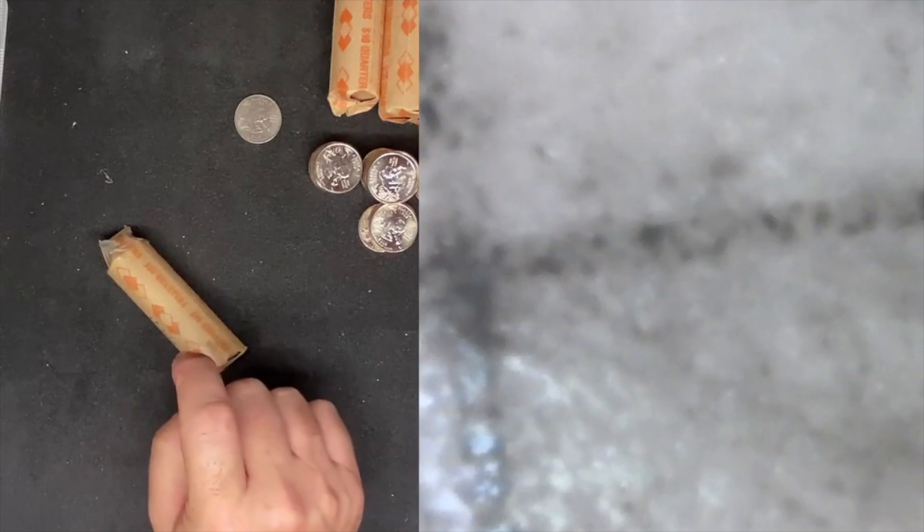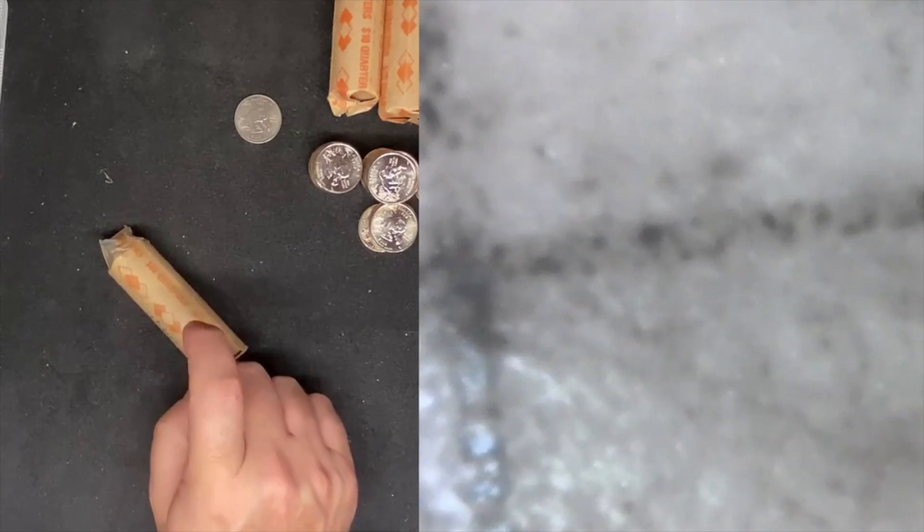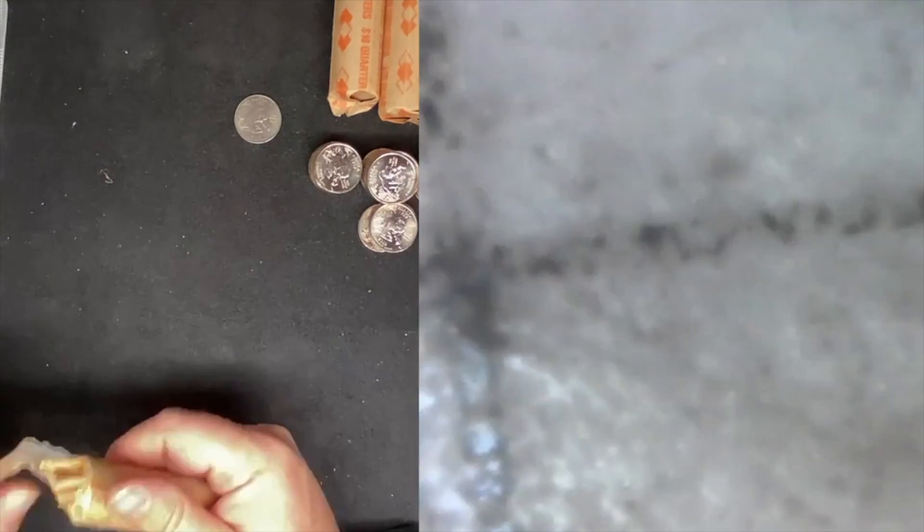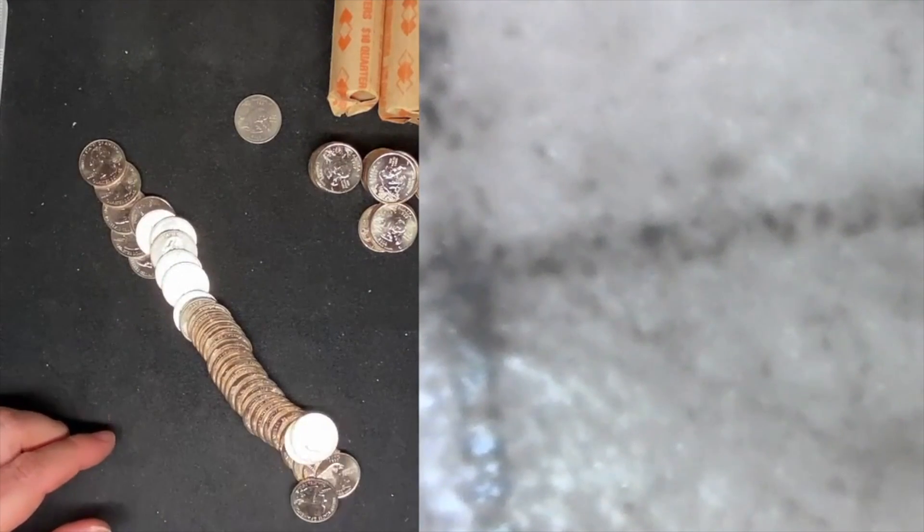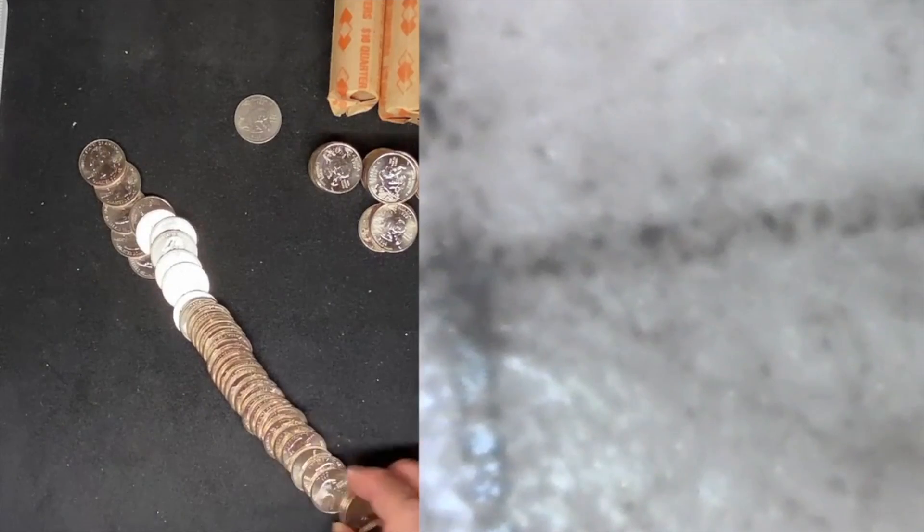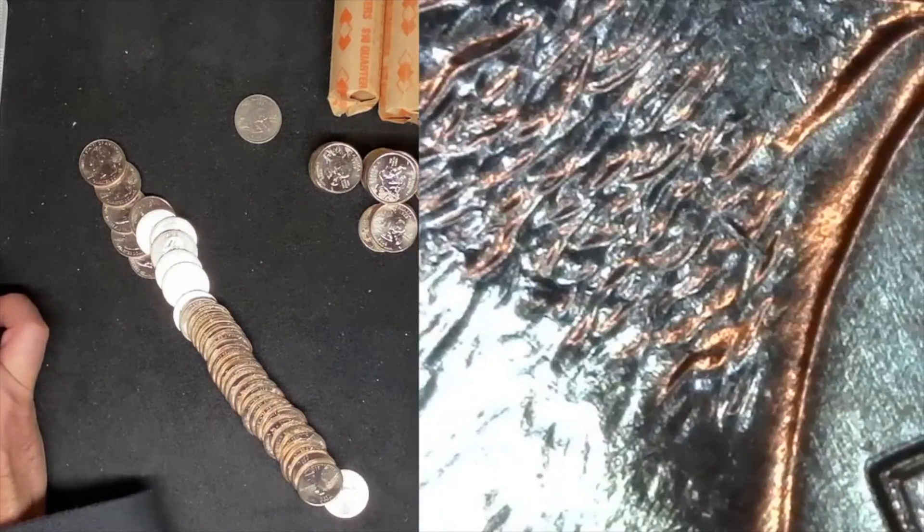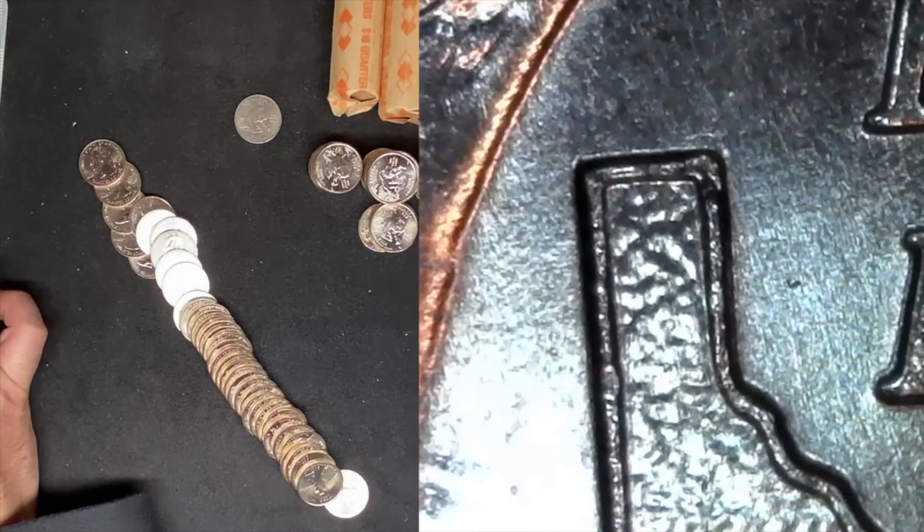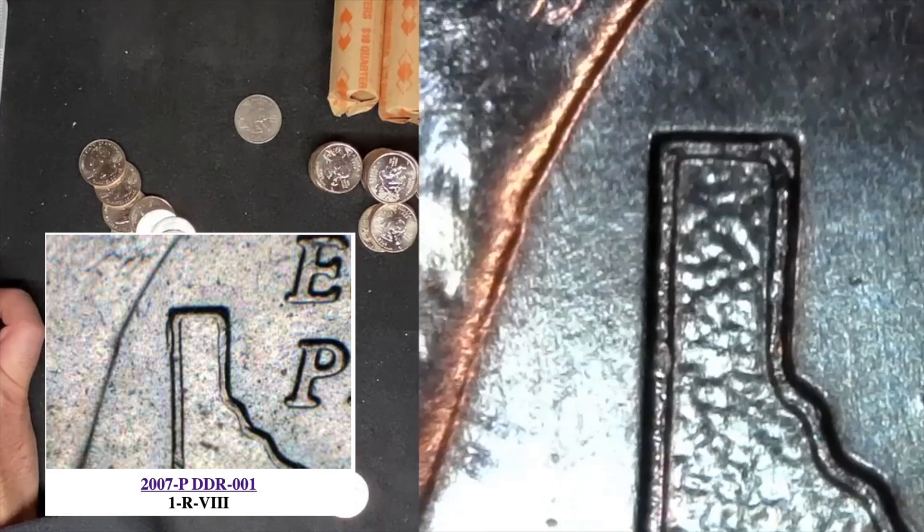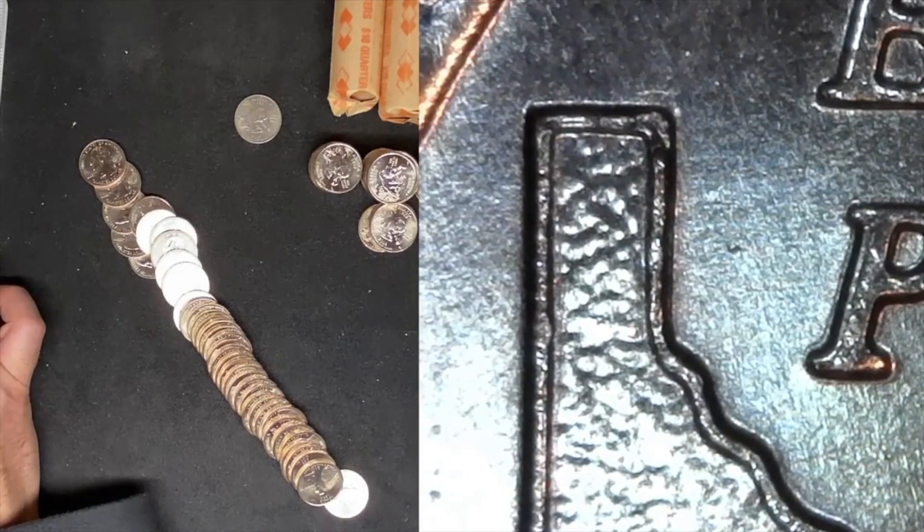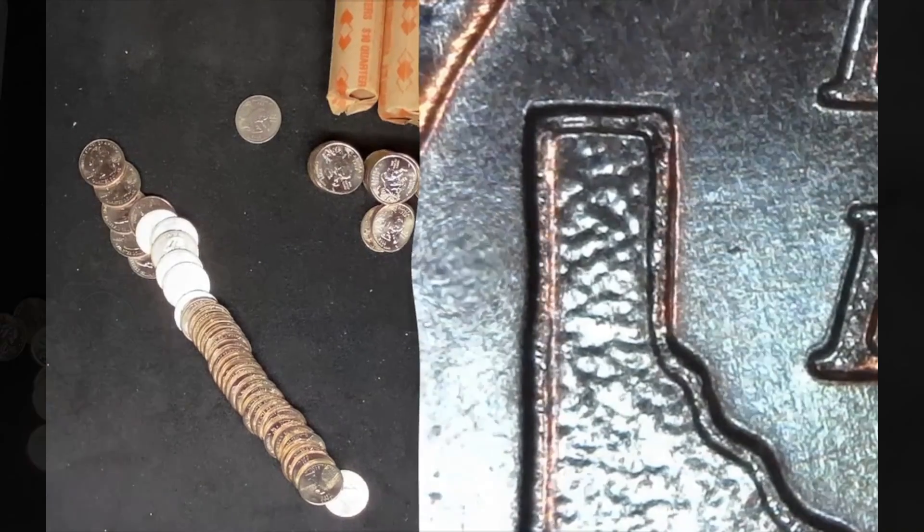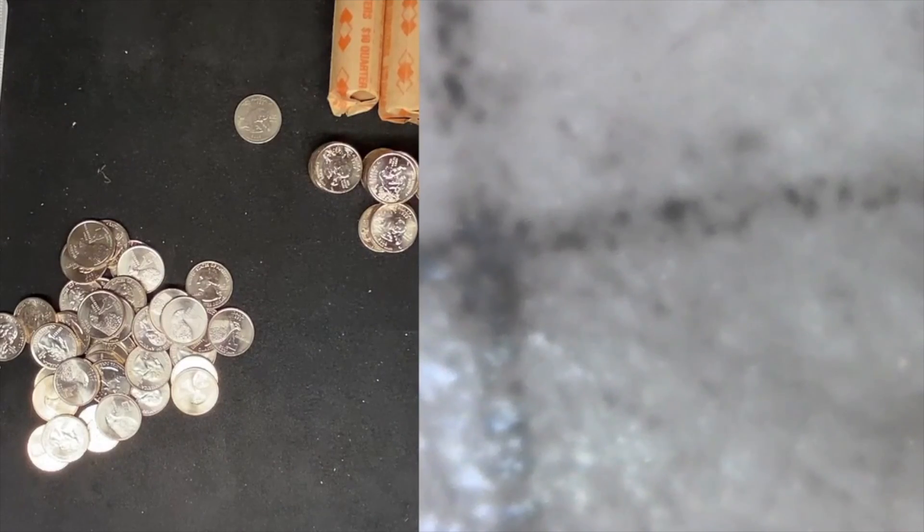Okay, so what we have left is I've got some 2020 quarters, and I've got this roll of Idaho's. I just looked up on Variety Vista. There is apparently a DDR. There is some spread and doubling right there at the tip of the state of Idaho. So, I'm going to go through all these really quick. I'll bring you guys in if we find anything that looks interesting. So, that was the end of the Idaho's, and we found a whole lot of nothing. Those are going right back in the bin.